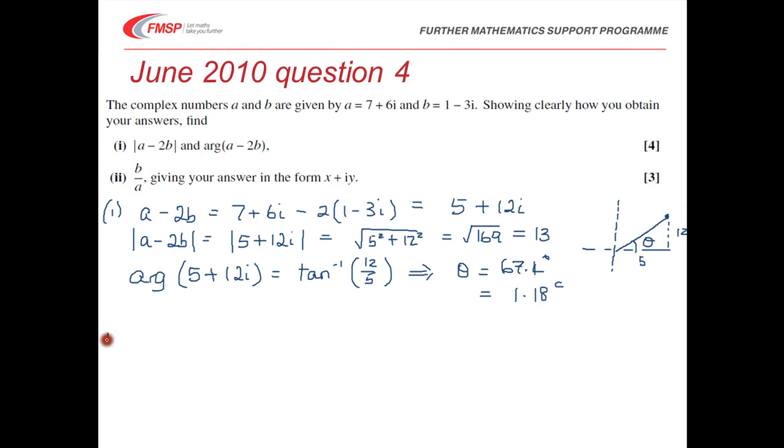And then in part 2 we're asked to find B divided by A. So that's 1 minus 3i over 7 plus 6i. So you are dividing one complex number by another. And the trick, as you will know I'm sure, is that you need to multiply the top and bottom line by the conjugate. So if the denominator is 7 plus 6i, then we multiply both top and bottom line by 7 minus 6i.